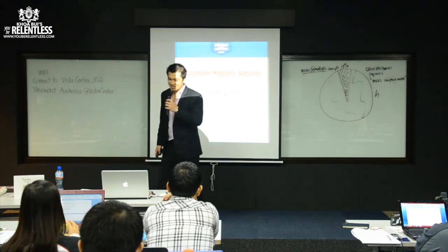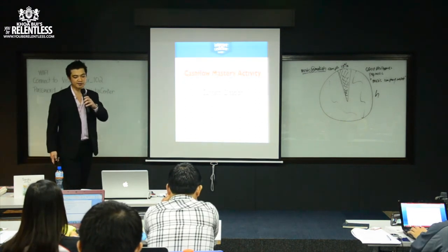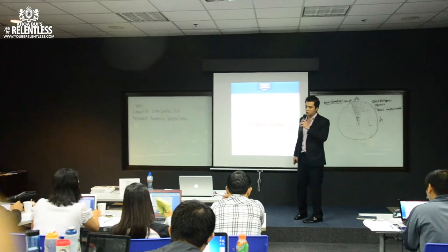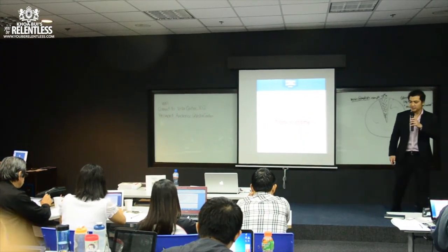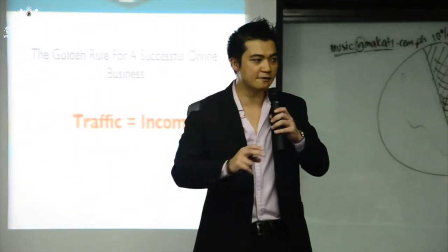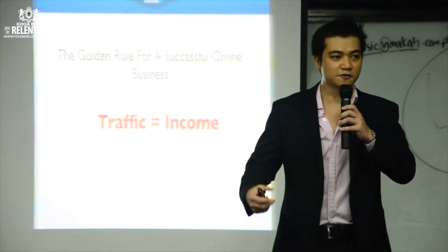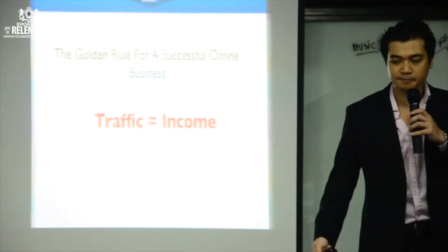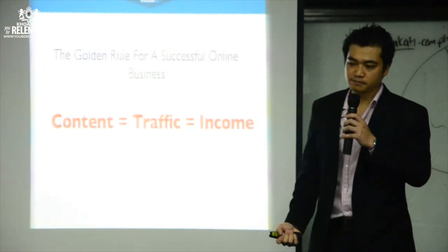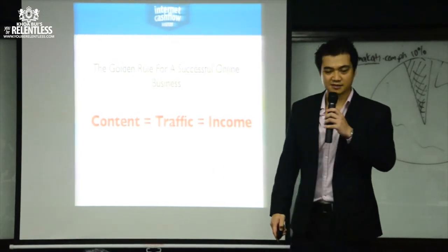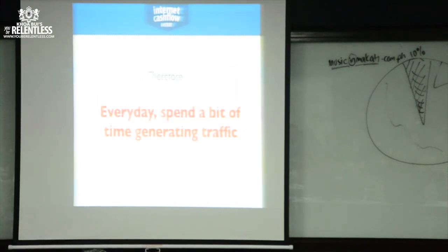The first cash flow mastery activity is content creation — this is the 10% I was talking about. The golden rule for a successful online business is: traffic equals income. Without traffic you cannot generate income. It doesn't matter if you've got the best-looking website with great design and logo — if you don't have traffic going to the website it won't do anything. It's like setting up a business in the middle of the desert. Content goes to traffic, and traffic goes to income.